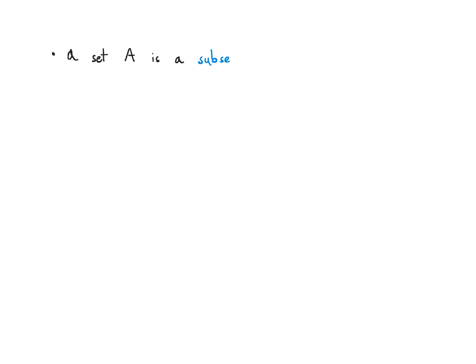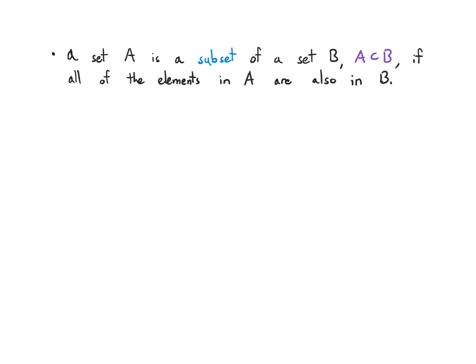A set A is considered to be a subset of a set B, written as A with this tilted U symbol B, if all of the elements in A are also elements of B. As an example, if A is the set {1, 4} and B is the set {1, 2, 3, 4}, then A is a subset of B.